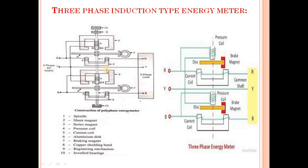Here are three phases and this is the spindle — it is common. This is the second shunt magnet, and this is the third series magnet. The fourth component is the pressure coil. Here we place the pressure coil, and the second is the current coil. Here are two current coils, and the connection diagram is very clear.